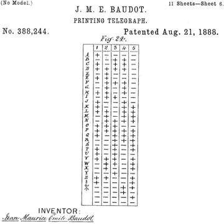Once the keys had been pressed, they were locked down until mechanical contacts in a distributor unit passed over the sector connected to that particular keyboard. When the keyboard was unlocked ready for the next character to be entered, an audible click known as the cadence signal would warn the operator. Operators had to maintain a steady rhythm, and the usual speed of operation was 30 words per minute.